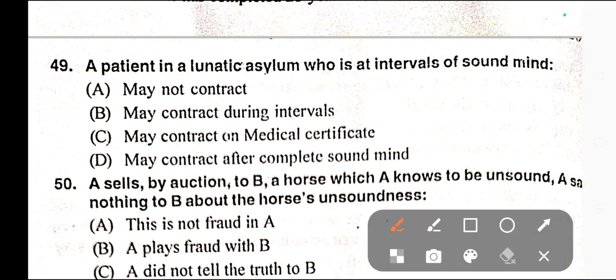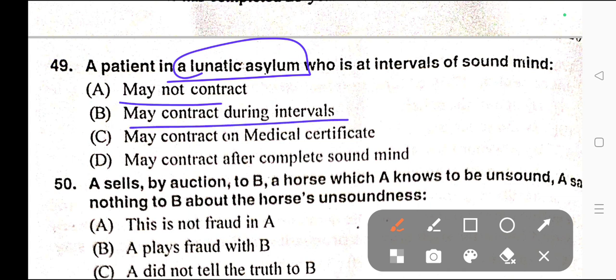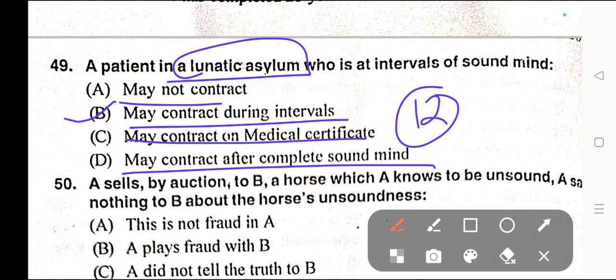Question number forty-nine: A patient in a lunatic asylum who is at intervals of sound mind — A) May not contract, B) May contract during intervals, C) May contract on medical certificate, D) May contract after complete sound mind. Correct answer is option B — may contract during intervals. For more information, read Section 12 of the Indian Contract Act.